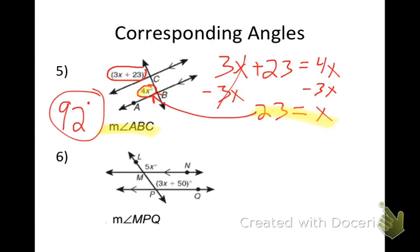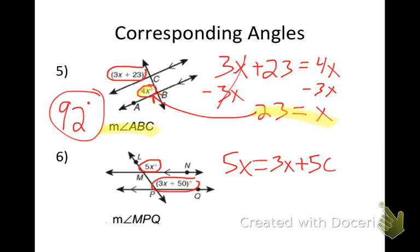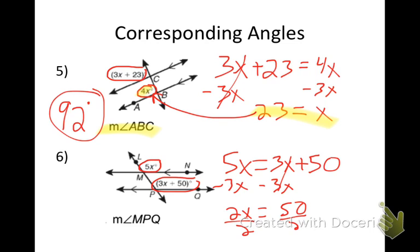Number six — same idea. I have 5X and 3X + 50. What type of angles are those? Corresponding. So I say 5X = 3X + 50. I subtract 3X: 2X = 50. Divide by 2 — X = 25.